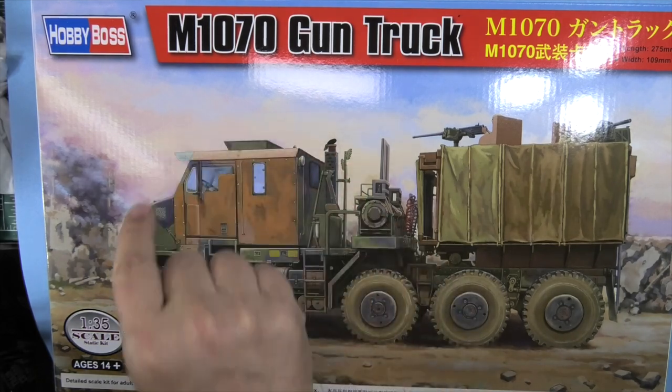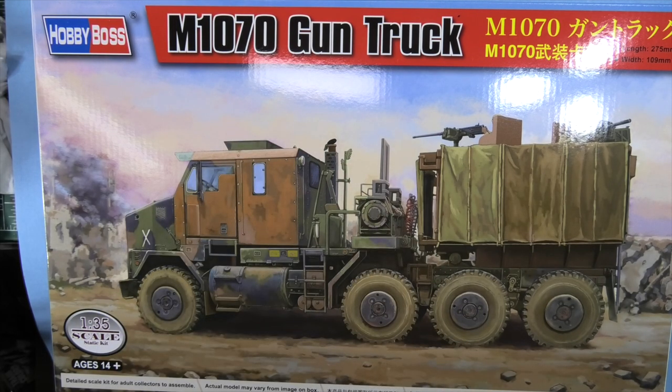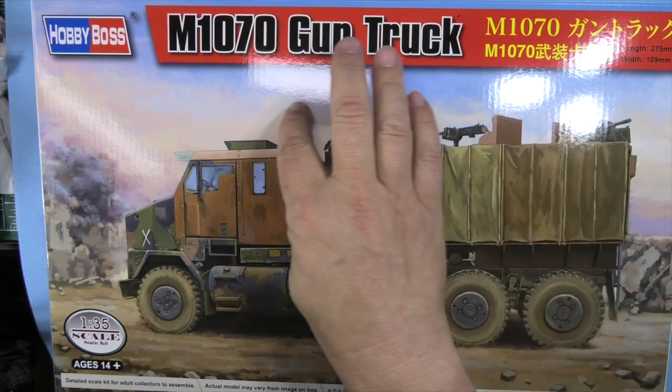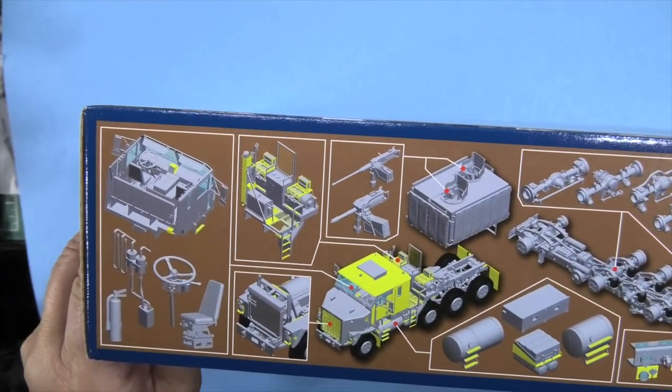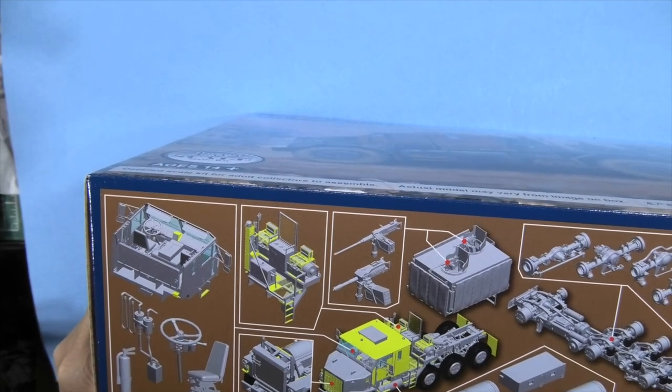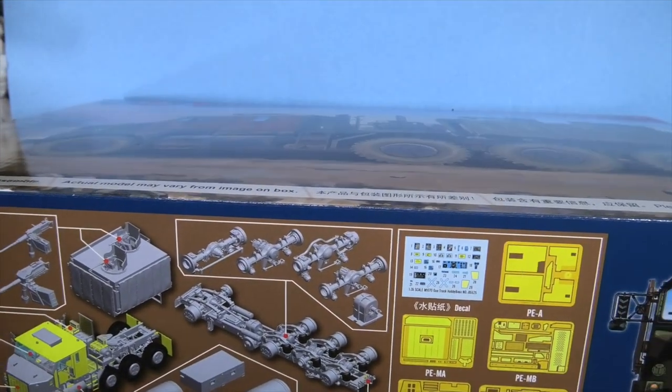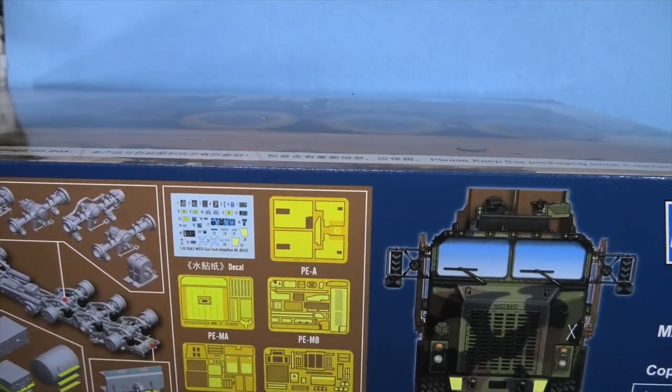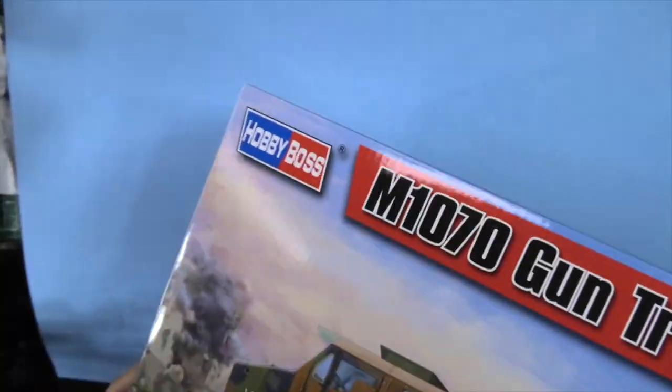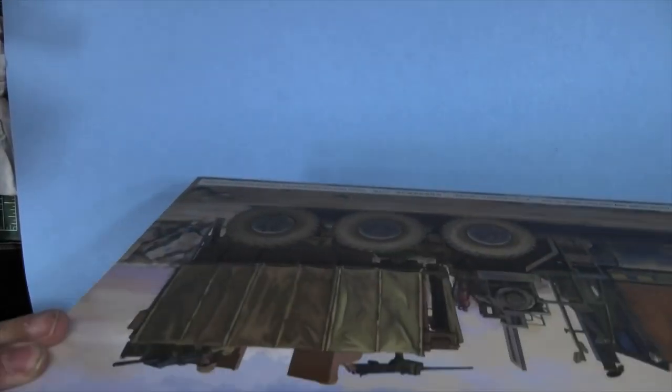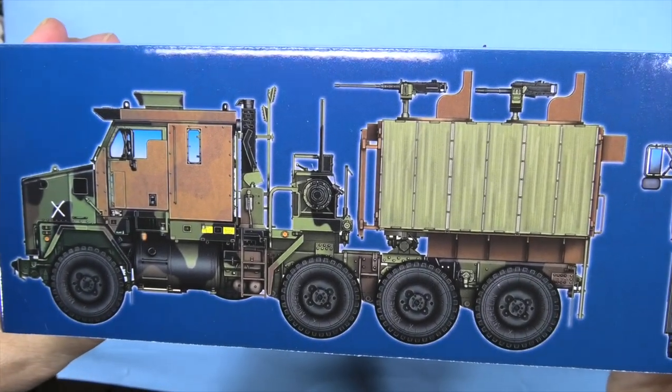But most of the rest of the stuff back here, the guns, some of the internal parts, are all new tooling. Once you get inside the kit, beautifully detailed cab, gun turret placements, suspension, framing, five sheets of photo etch. You can do a camouflage pattern. So let's get in to what we got.